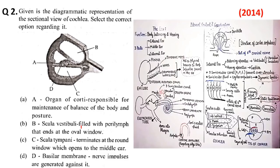तो यह आपकी revision के लिए important है। मैंने यह part discuss किया था जिसमें बताया था — external layer, middle layer जिसमें malleus, incus, stapes है, और stapes जो है fenestra ovalis के साथ attach होता है। Ovalis जो है scala vestibuli का end part है, यह scala media है और यह नीचे scala tympani है। तो यहाँ पर यह चारो options आई हैं।